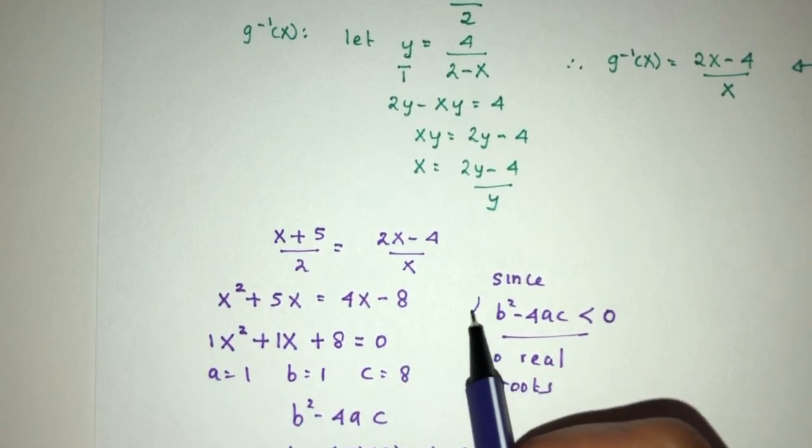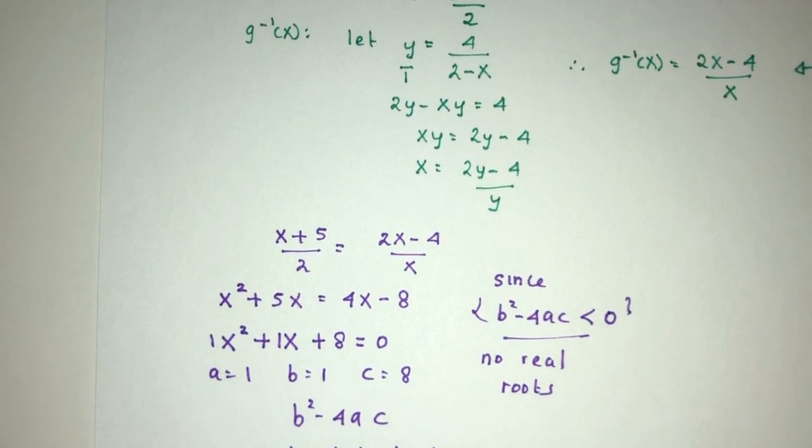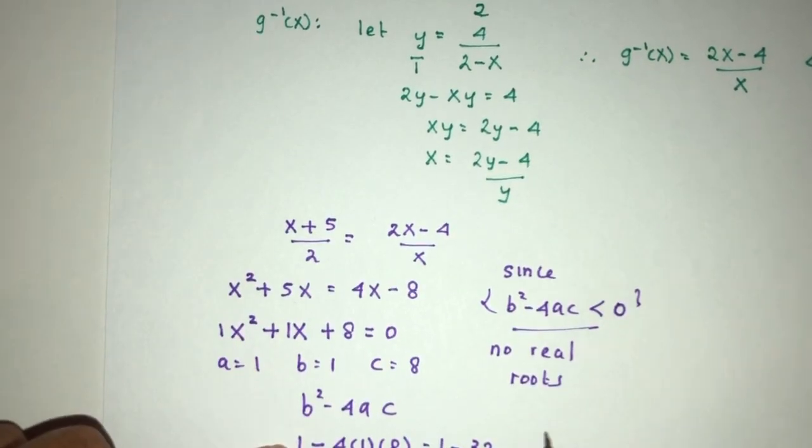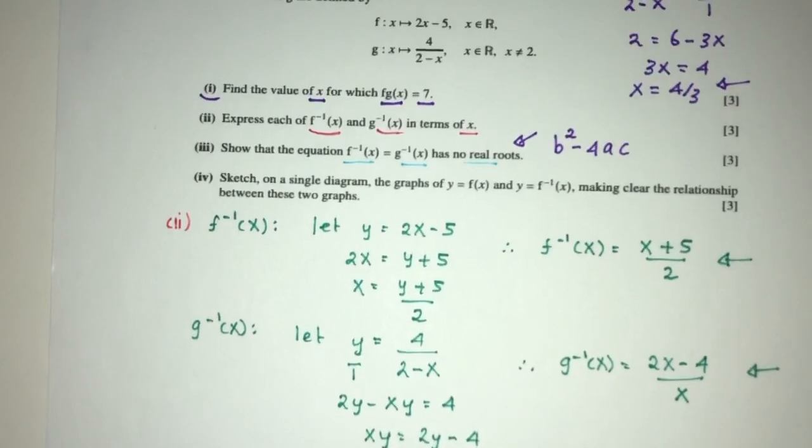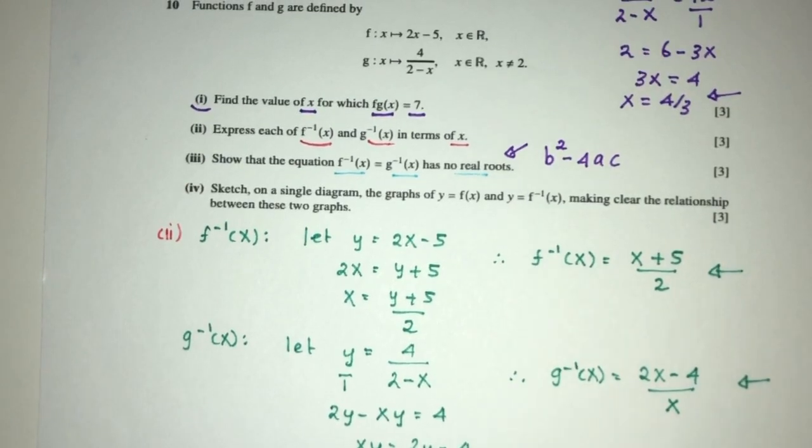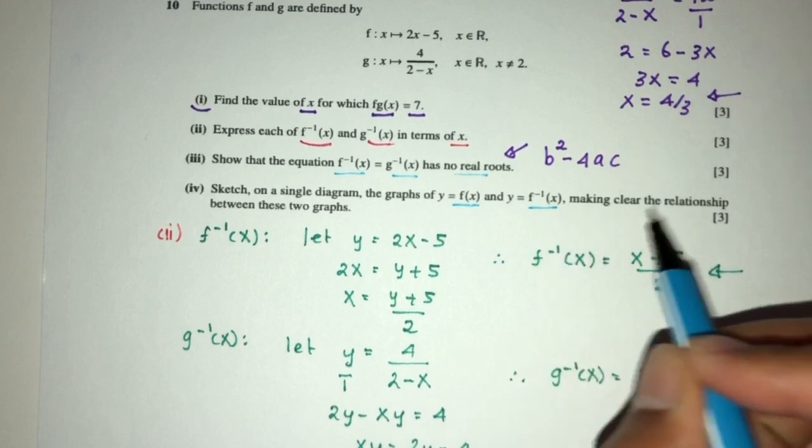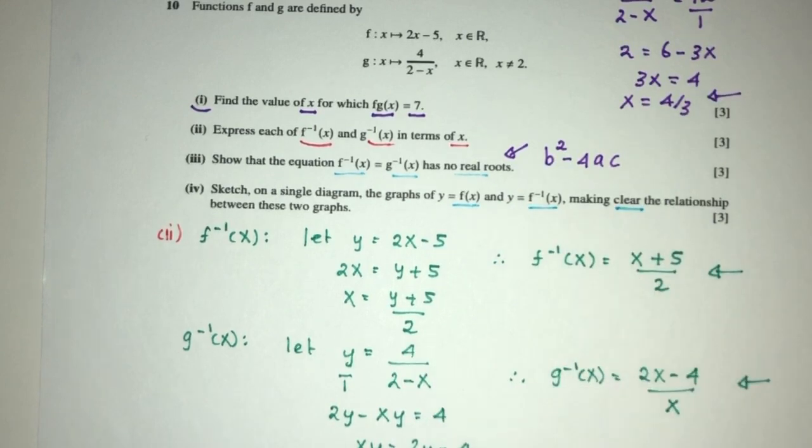They are looking for these indications for the marks. You have to show that you tried this, then this, and because of that you don't have any real roots.